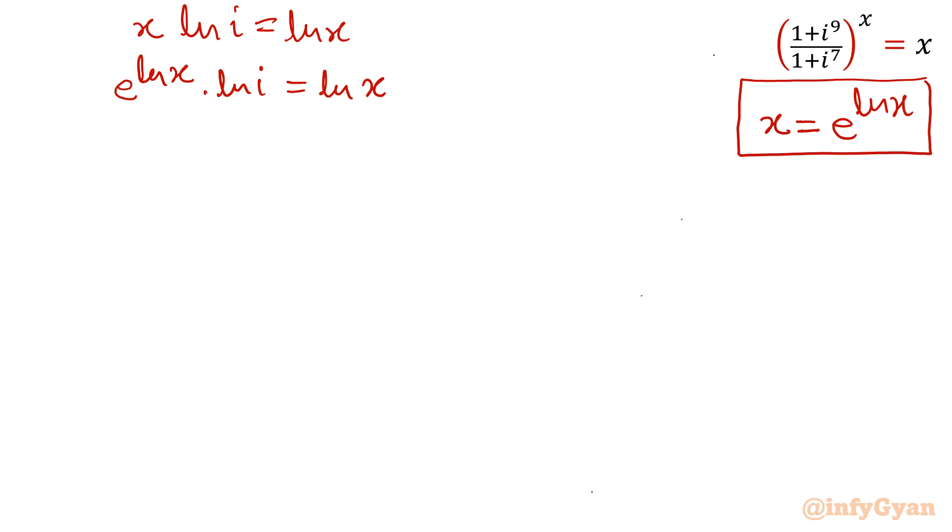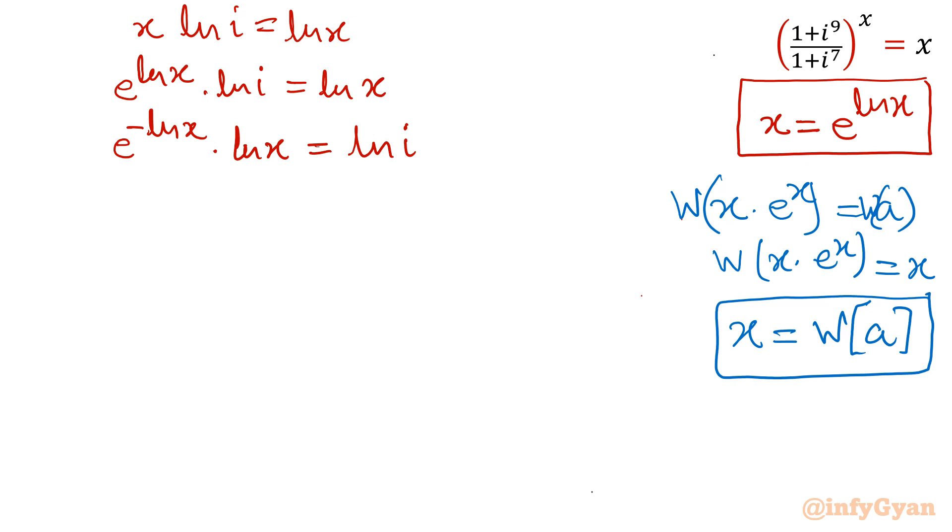Now I will rearrange the terms. So I can write e raised to the power, I will take e^(ln x) to the right. It will go to the denominator. Then I will take in the numerator by writing its power negative. So e^(ln(-ln x)) times ln x equal to ln i. Now it is in standard form. So I am talking a standard form means x times e^x is equal to a. And as we know the Lambert W function of x times e^x. Then we can write this is x. So once we take Lambert W both sides, we will have x is equal to Lambert W function of constant a. This is what I am trying to collect.